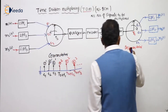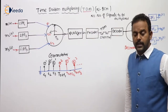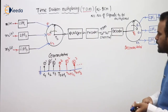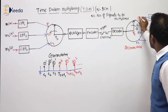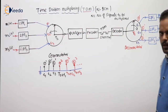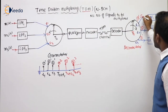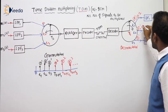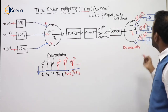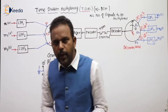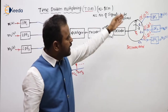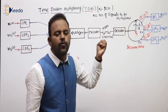When the decommutator operates at the same speed as the commutator, at time T1 what is available is the first message's first sample. At Ts+T1 the first message's second sample. At Ts+T2 the second message's second sample, at Ts+T3 the third message's second sample. All the samples of each and every message are separated and given to their respective low pass filters, which reconstruct their corresponding messages from those samples.